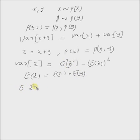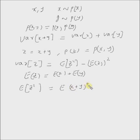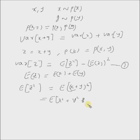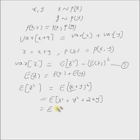Now, let us derive the first term, expectation of z squared. Since z is x plus y, expectation of z squared becomes expectation of x plus y whole square. Now, let us call this equation 1. Expanding this, expectation of x plus y whole square gives us expectation of x squared plus y squared plus 2xy, which is expectation of x squared plus expectation of y squared plus expectation of 2xy.